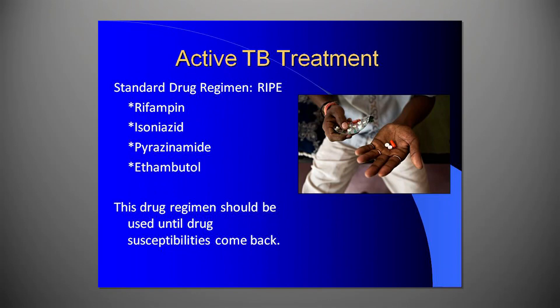The treatment of choice for active cases is a combination of the antimicrobial drugs isoniazid, rifampin, pyrazinamide, and ethambutol. Tuberculosis drugs have to be taken regularly, typically for 6 to 12 months, and have to be given by directly observed therapy or DOT, which means that the medication is taken while being witnessed, usually by a public health staff member. This can be coordinated through Public Health Madison and Dane County.